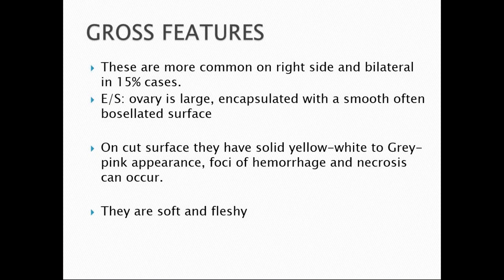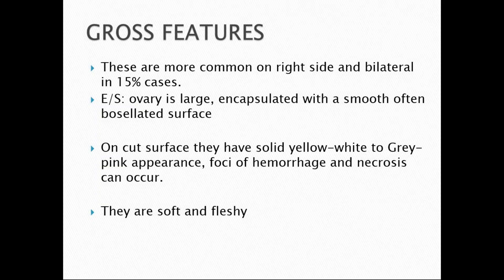Coming to the gross features, dysgerminomas are more common on the right side and bilateral in 15% of cases. On the external surface, the ovary is enlarged and encapsulated with a smooth, often porcelain-like surface. On cut section, we notice solid gray-white to yellow areas with foci of hemorrhage and necrosis.